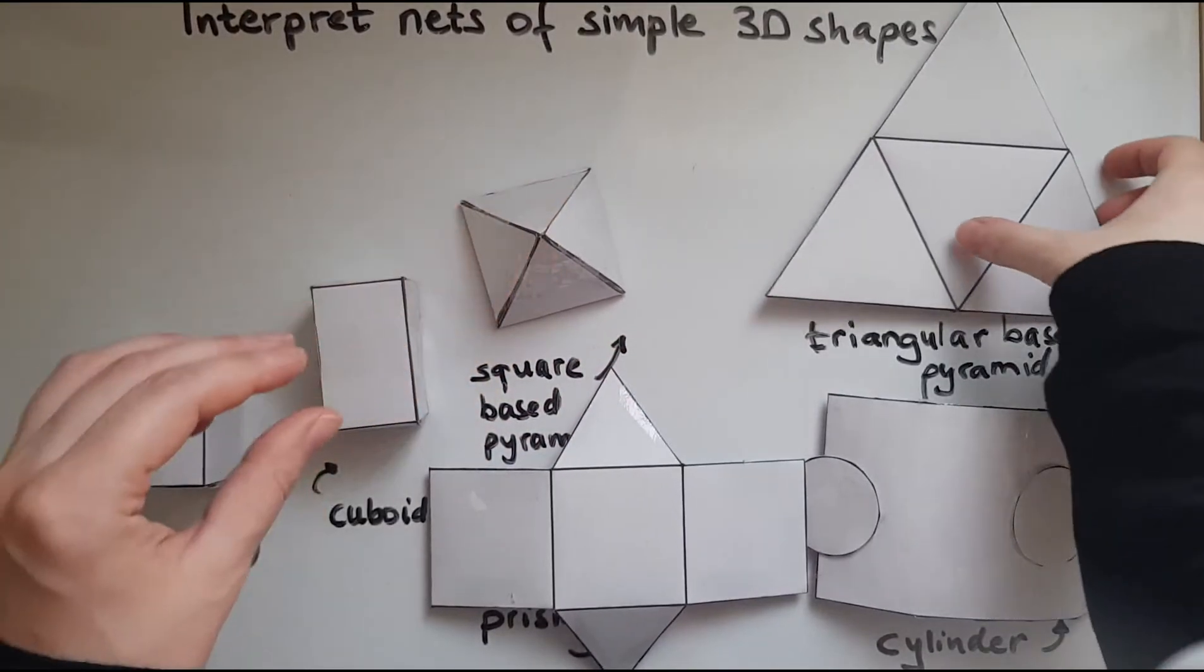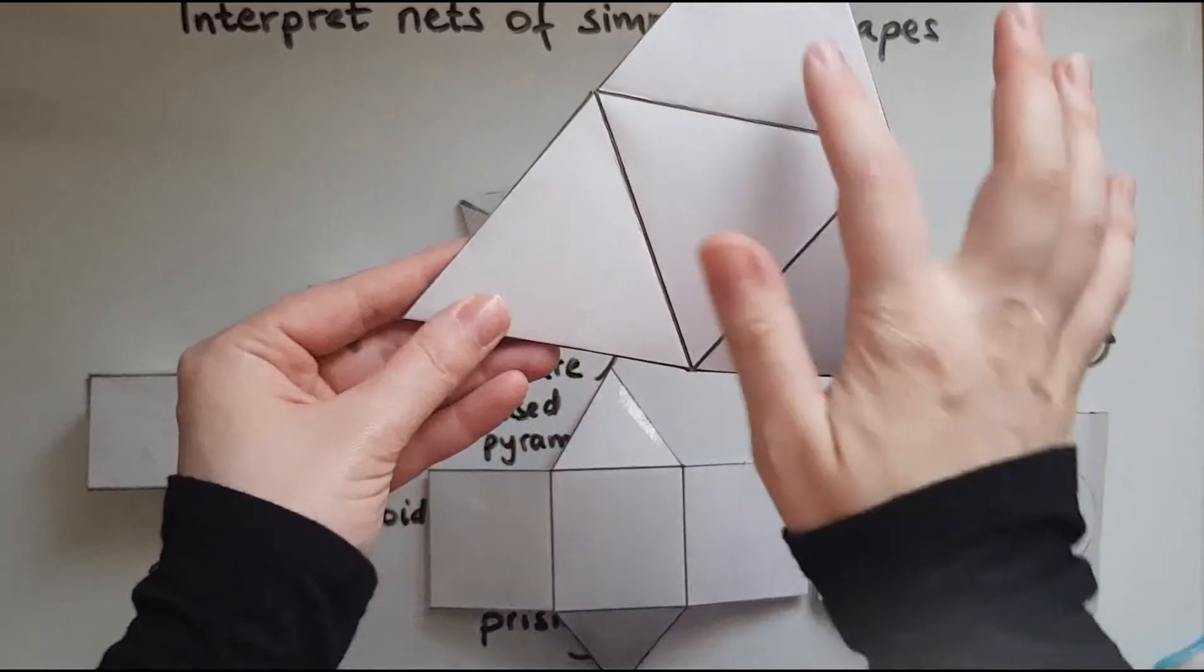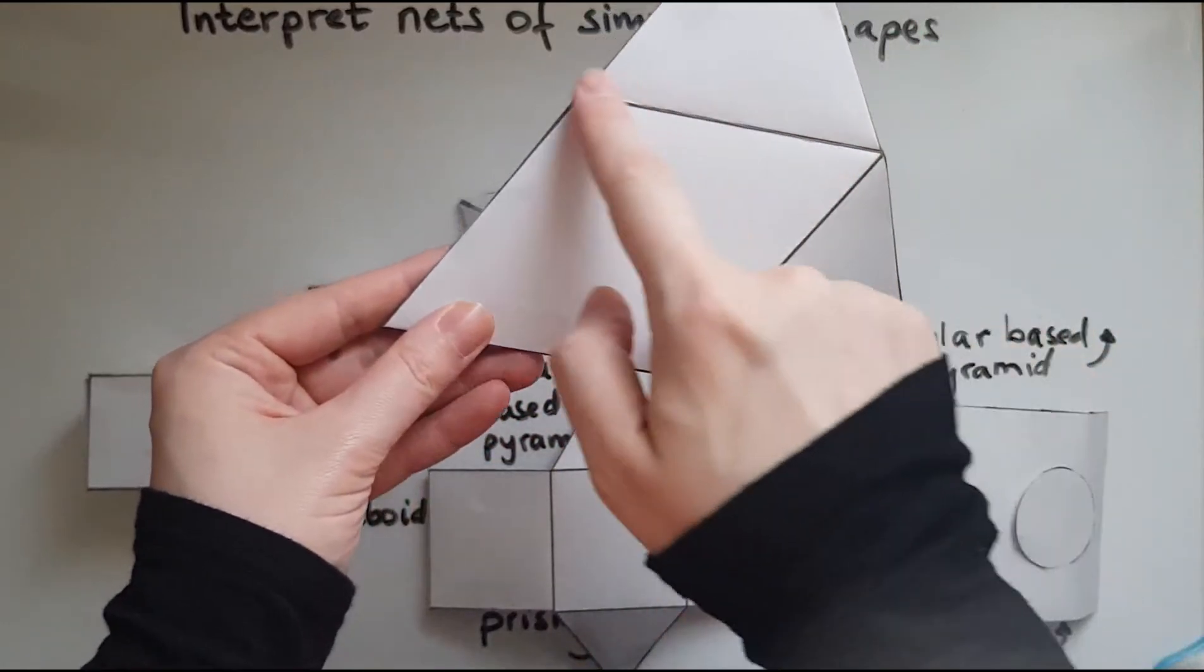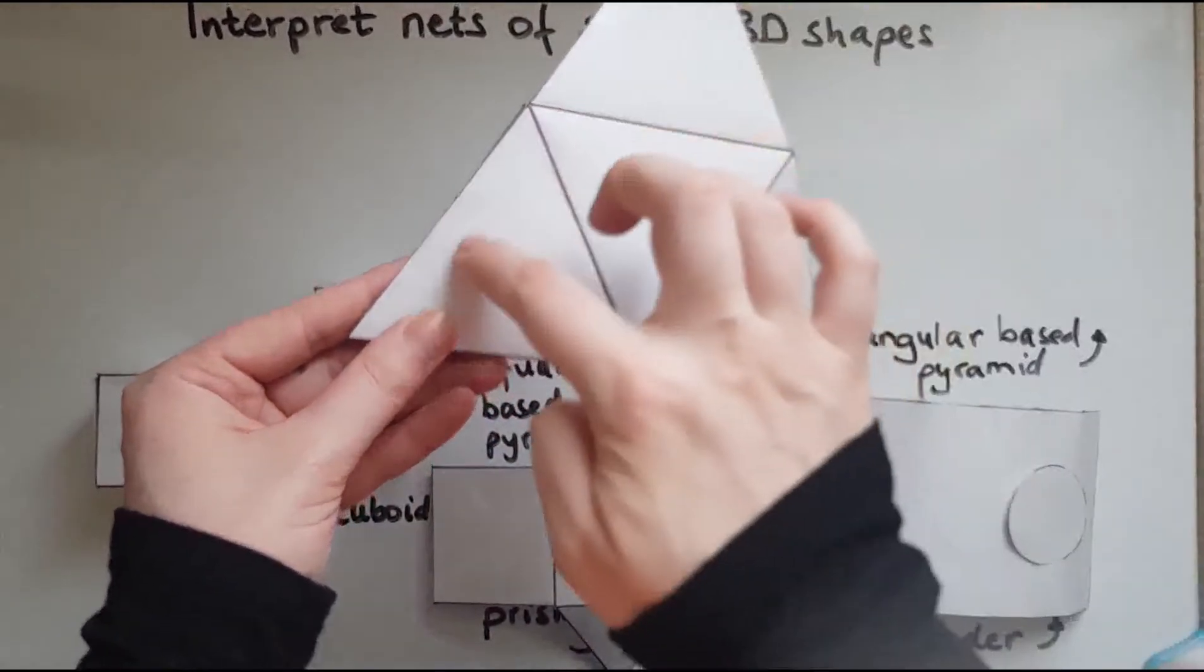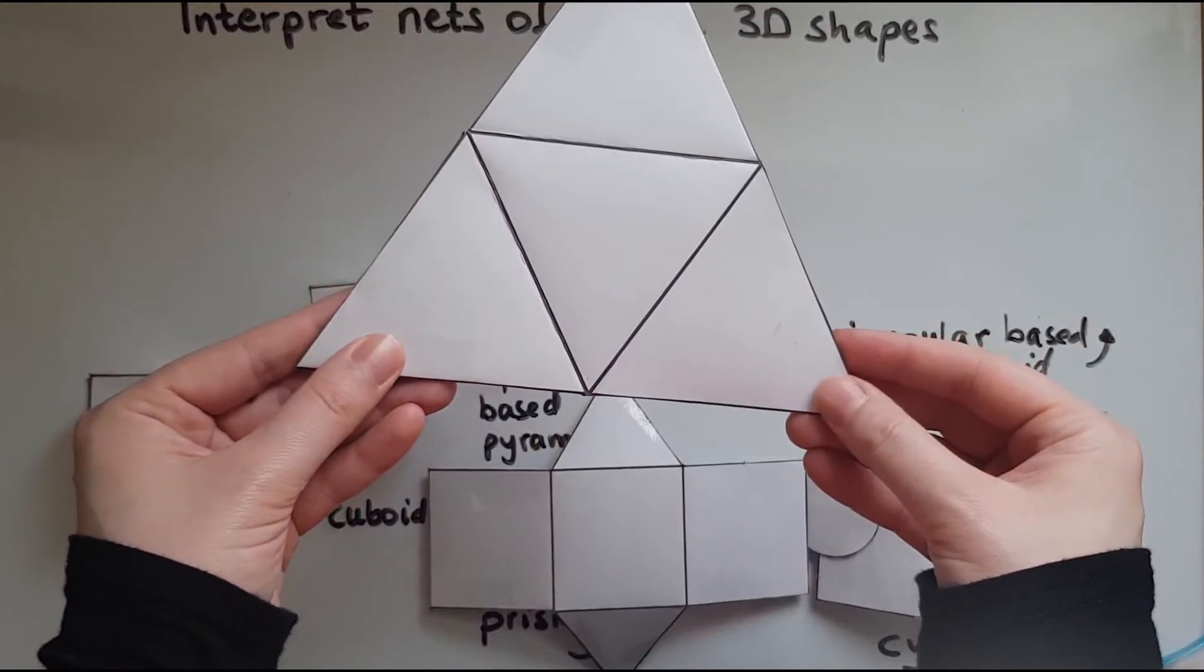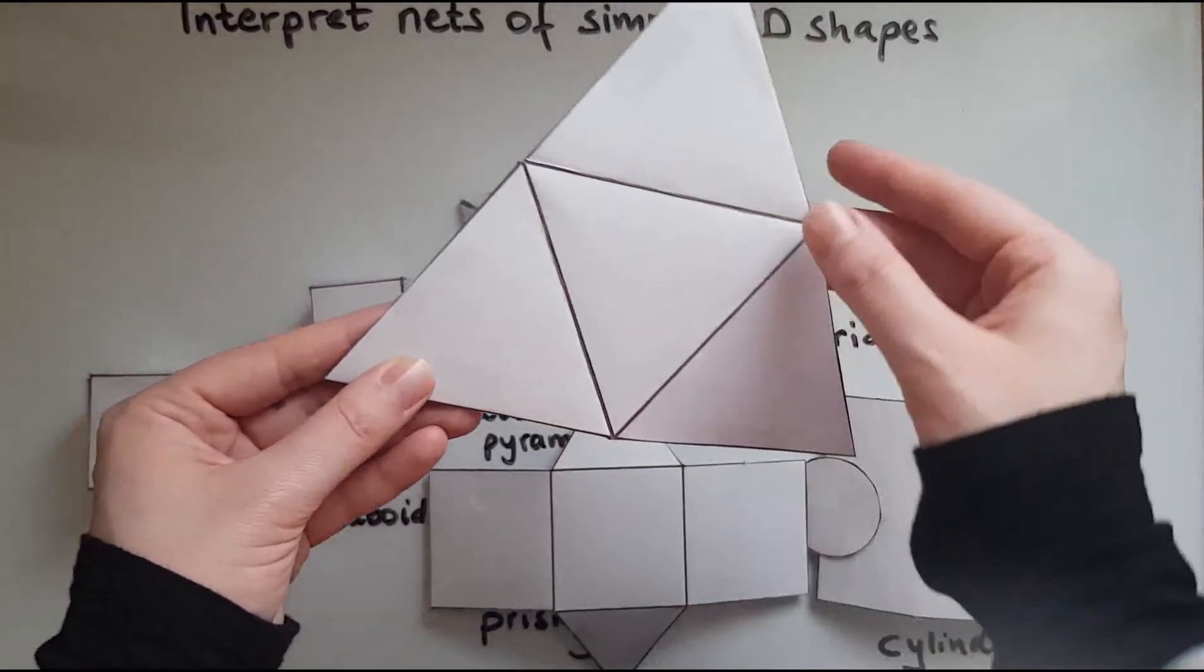We'll now look at the triangular base pyramid. As you can see, there are four triangles. And there is a triangle at the base. And we have these three other triangles of the same size attached to the base.